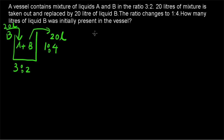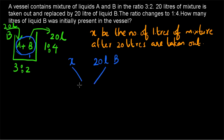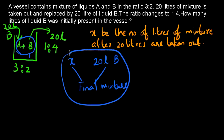How do we proceed? Let x be the number of liters of the mixture after 20 liters has been taken out — that is, the quantity of mixture remaining after 20 liters are removed. We don't know the initial quantity. This x, when combined with 20 liters of B, gives the final mixture. We are also given the ratio of A and B in the final mixture. Using this, we can apply the rule of allegation. Since we are adding B, we take this x quantity and determine the amount of B present in x, and the amount of B in the final mixture.